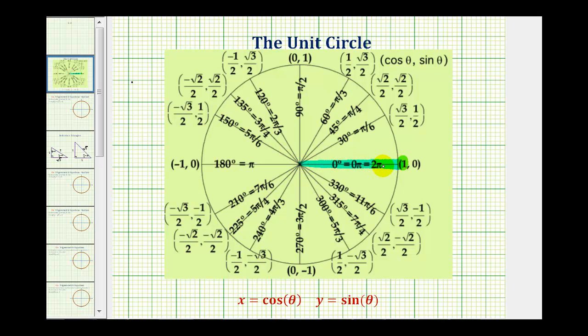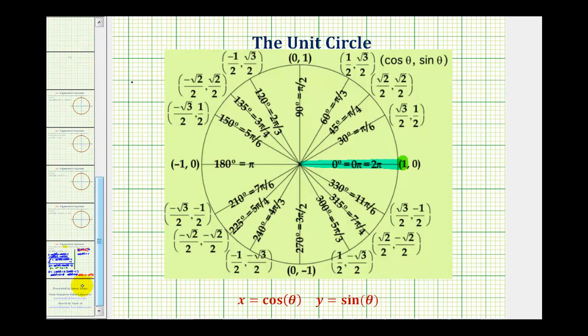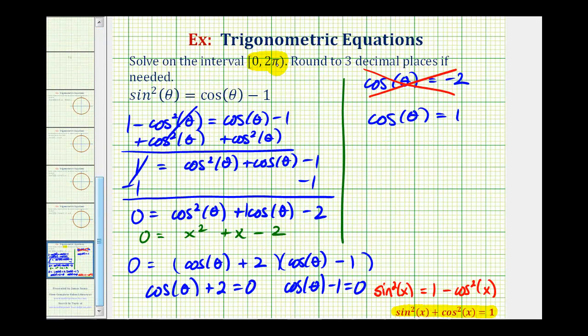But remember, going back to our problem, this interval includes zero, but not two pi. So in this case, our equation only has one solution. It's theta equals zero radians.